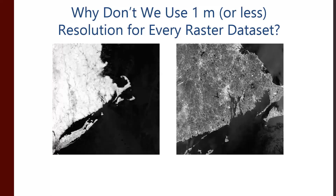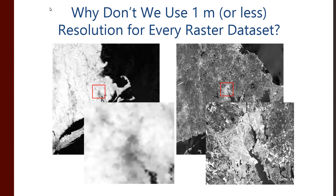Now that you've played a little bit defining your own rasters, one of the things that pops up — thinking about the scale question and the definition question — is, why don't we just use one-meter pixels for everything? If your pixels are smaller, you can more accurately represent the landscape, and you have more flexibility in terms of what you can show and see. But if your pixels are smaller, you also have a lot more of them.